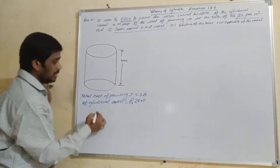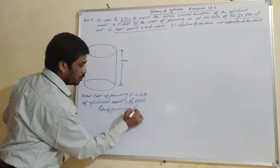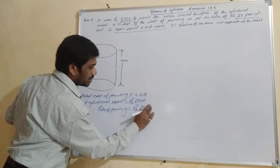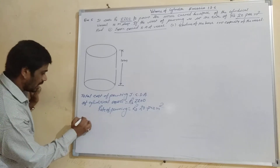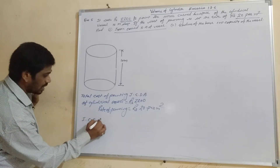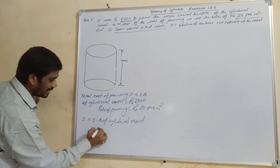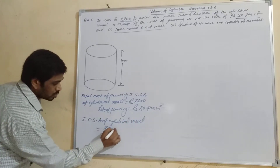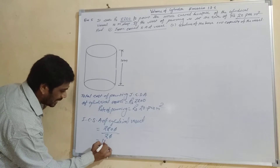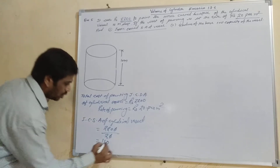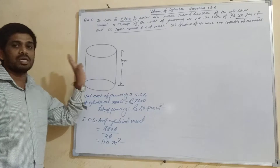The rate of painting is given as 20 rupees per square meter. So we can find the inner curved surface area of the cylindrical vessel by dividing total cost 20,100 by the rate, 20 rupees per square meter. You will get 110 square meters. So the inner curved surface area of the vessel is 110 square meters.